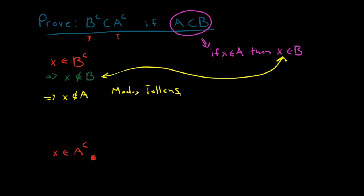I've got to the fact that if I start in B complement, I now know that I am not in A. What I want to get is that X is in A complement, and I think there's nothing more to be done here. If X is not in A, then by definition X is in A complement.